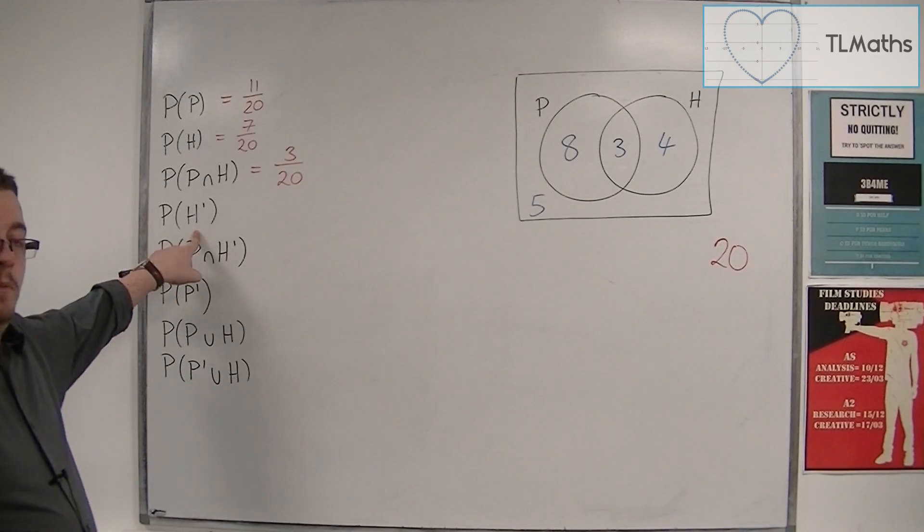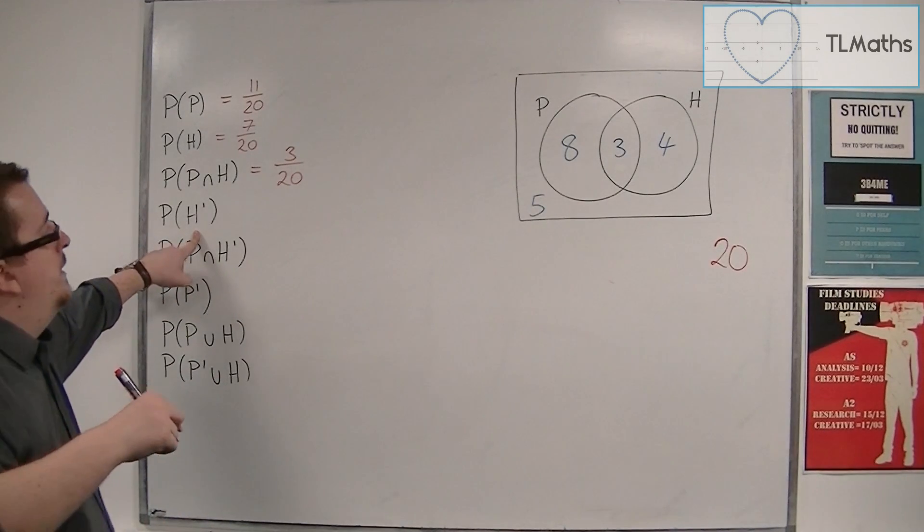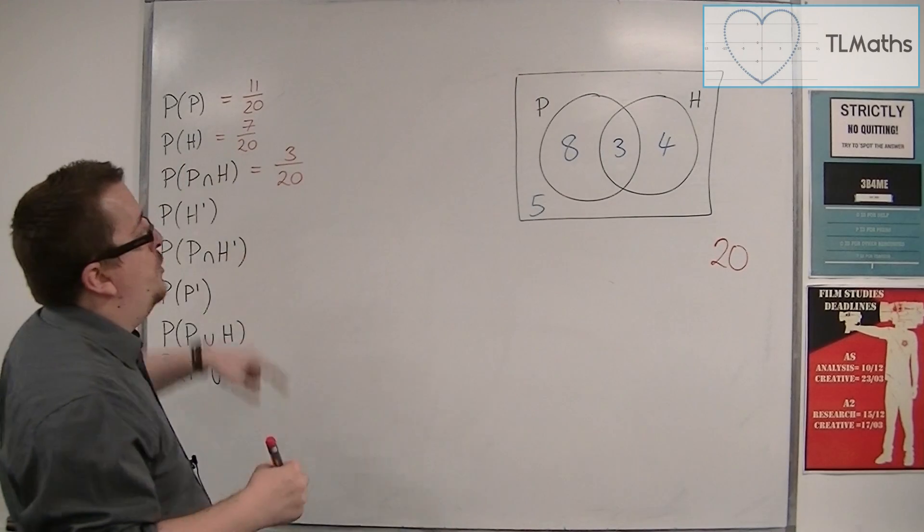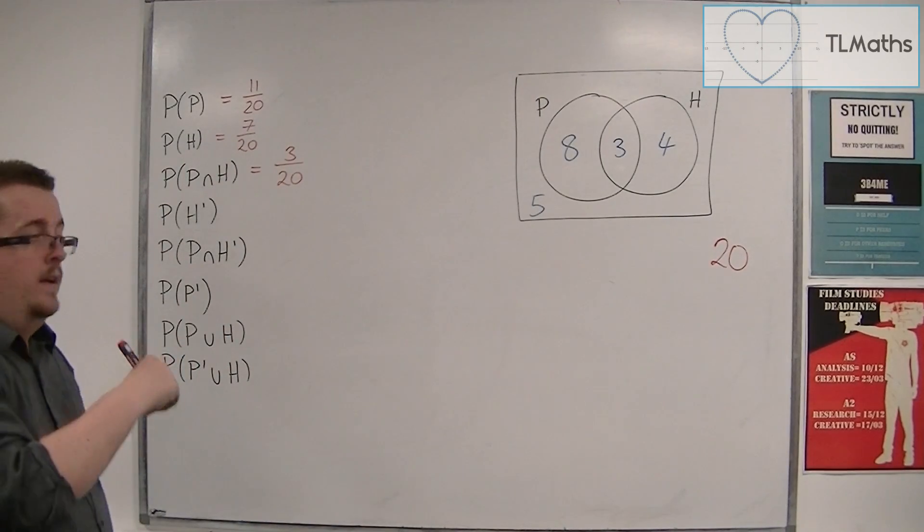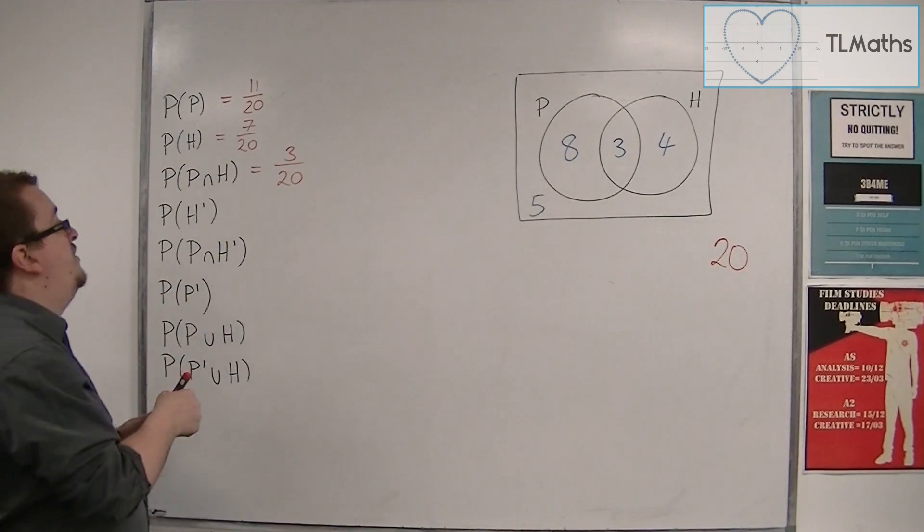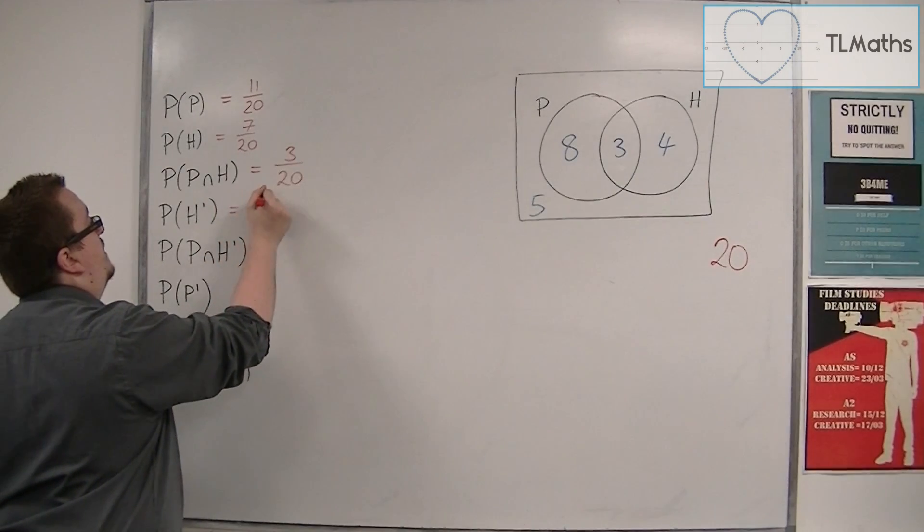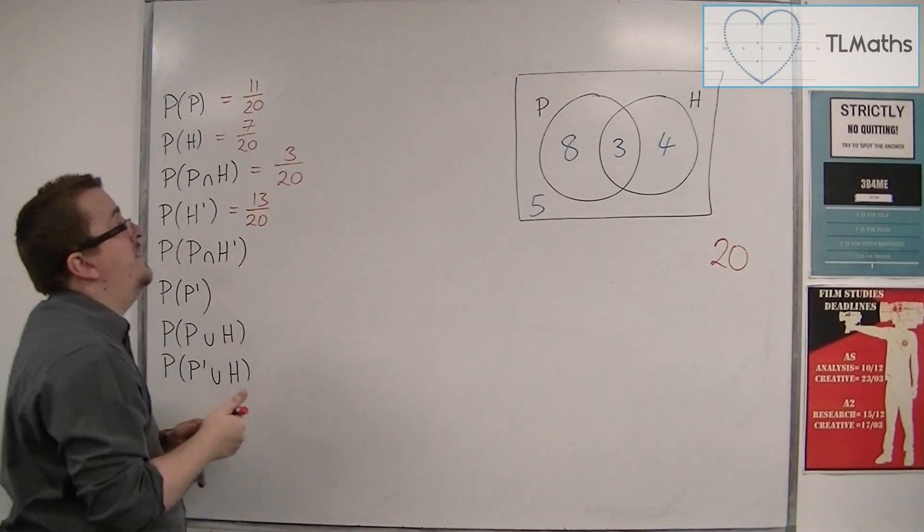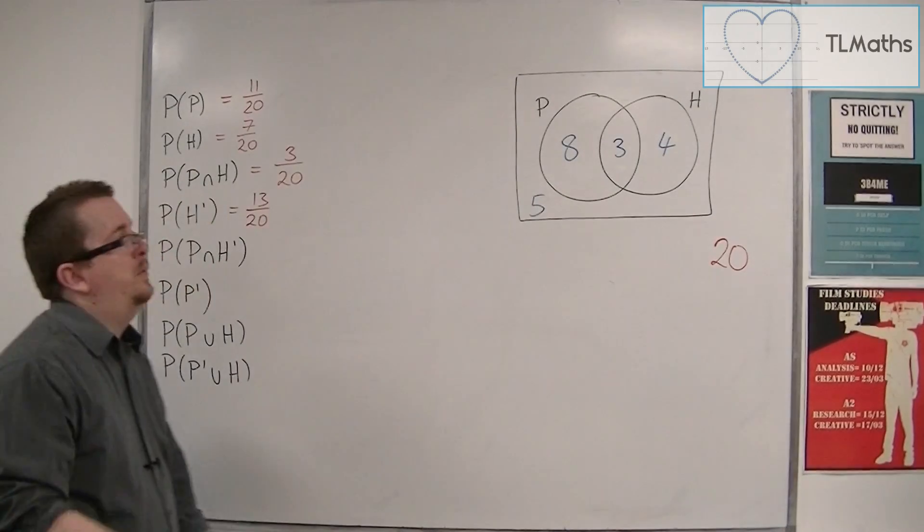Now, if I'm looking at the probability of not H, then I've got 7 who study history, and so 13 don't. And so that would be 13 of 20. And I can find that just by adding the 8 and the 5 together, for example.